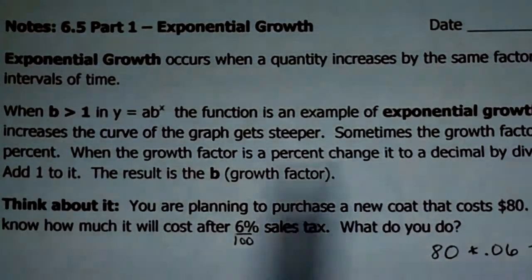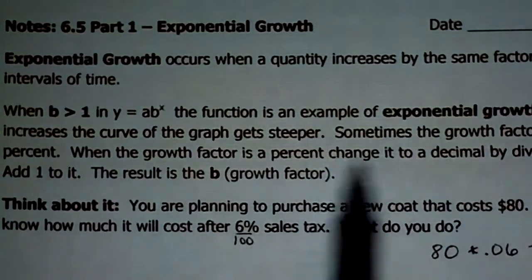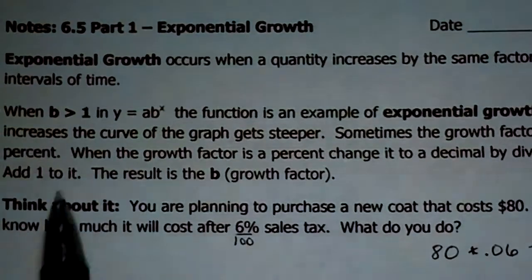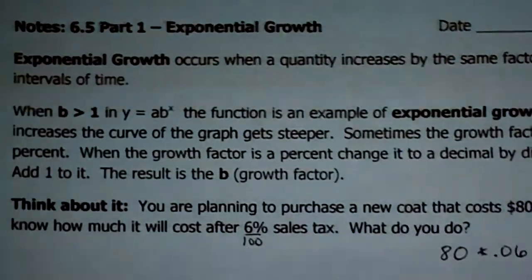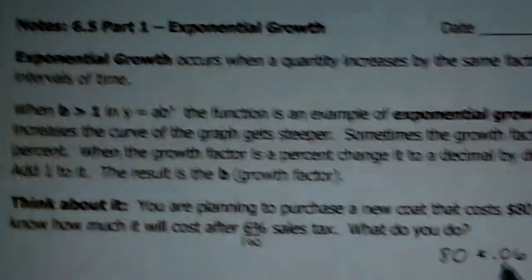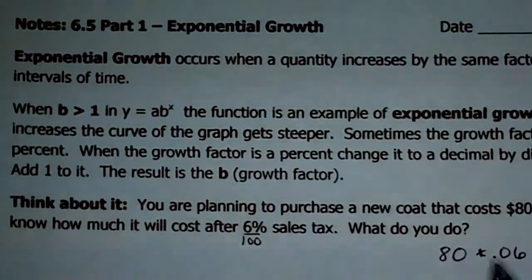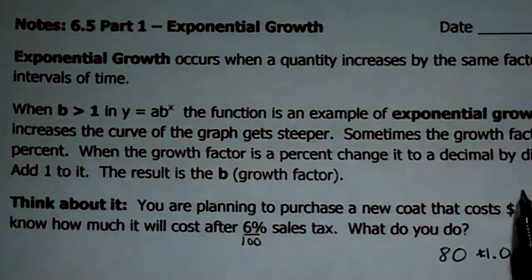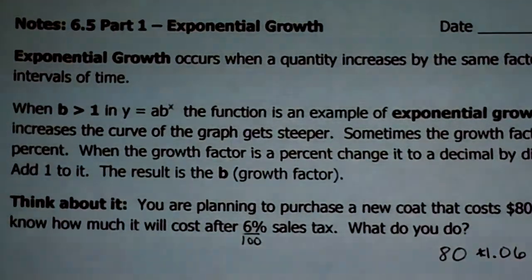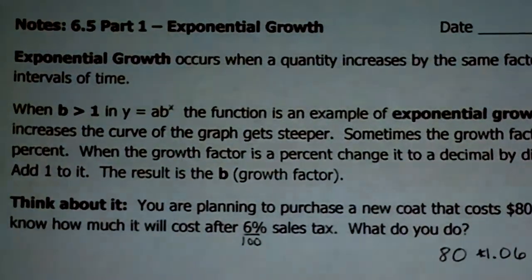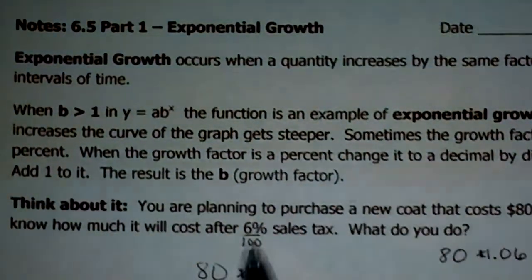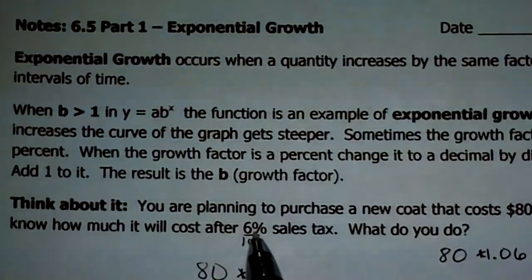So right there, that says, that's this part. When the growth factor is a percent, change it to a decimal by dividing it by 100. But then I tell you, add a 1 to it. Now, I don't want you just memorizing rules. I want you to know why you're doing what you're doing. If I would have changed this to 1.06, right? Because right now, didn't I just get the sales tax, and I still have to take that plus the 80 to get 84.80? There's an extra step there.